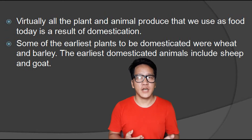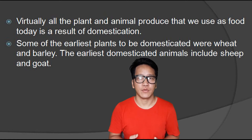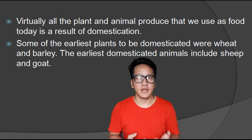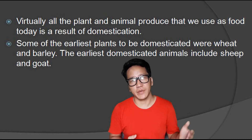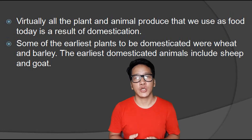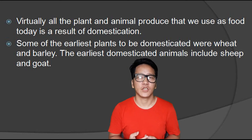Some of the earliest plants to be domesticated were wheat and barley. The earliest domesticated animals include sheep and goat.